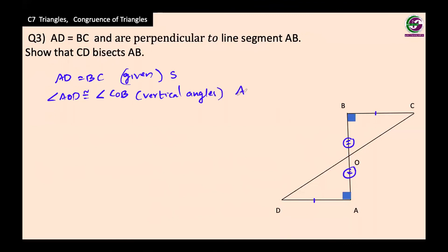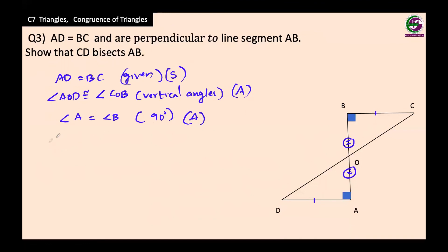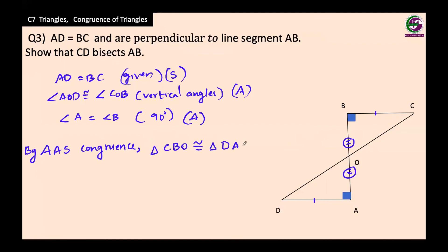So we have an angle. Next, angle A equals angle B, both being 90°, because they are perpendicular — that gives us another angle. Combined with the side AD equals BC, we now have angle-angle-side. Since there are two angles, this is AAS congruence. By AAS congruence, triangle CBO is congruent to triangle DAO.